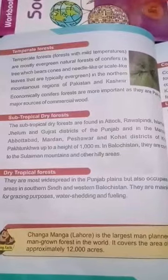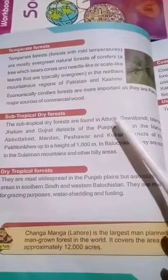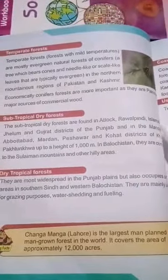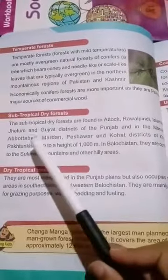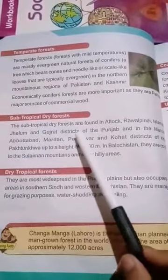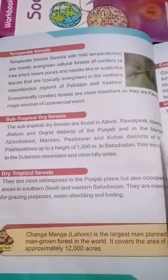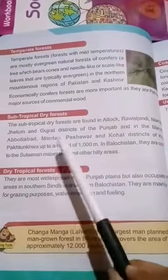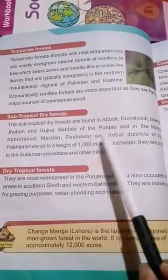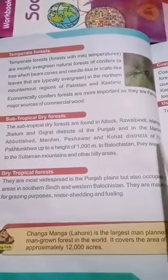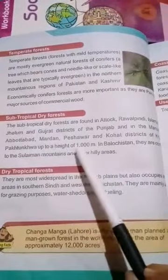Subtropical Dry Forests are found in Attock, Rawalpindi, Islamabad, Jhelum, and Gujarat districts of Punjab, and in the Mansehra, Abbottabad, Mardan, Peshawar, and other districts of Khyber Pakhtunkhwa.